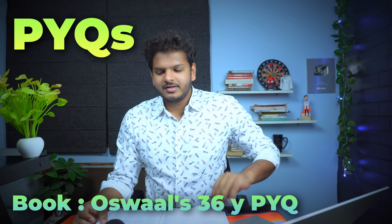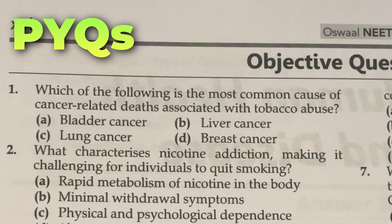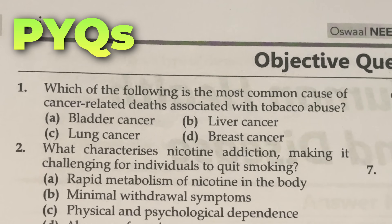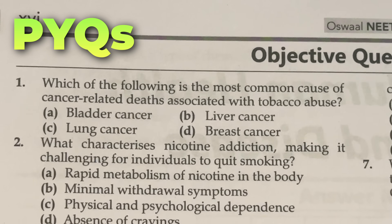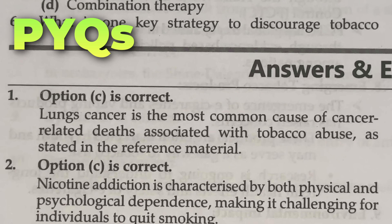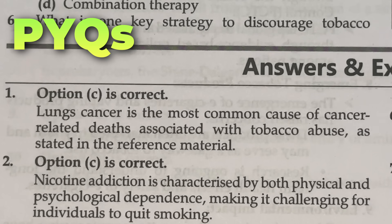The first thing you must know is the difference between previous year questions and previous year topics. Here's an example — a previous year question from biology, Human Health and Diseases: 'Which of the following is the most common cause of cancer-related deaths associated with tobacco abuse?' Options are bladder, liver, lung, and breast cancer. The real answer is oral malignancies according to surgery, but since that's not given, you follow NCERT — so the answer is lung cancer.